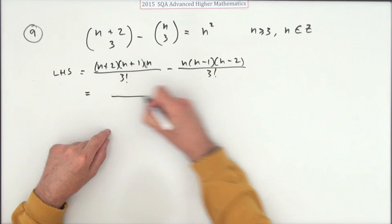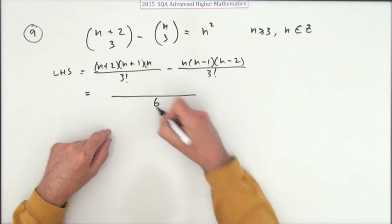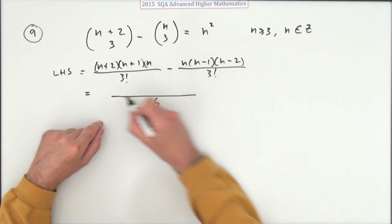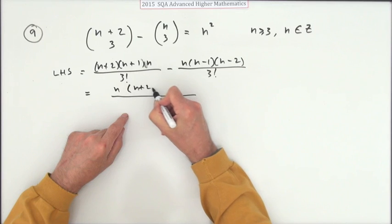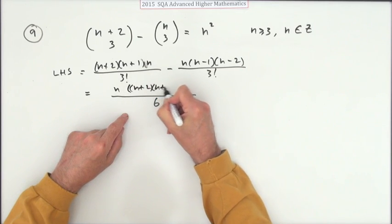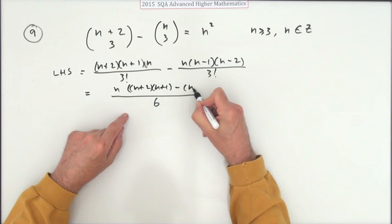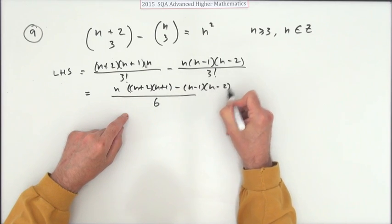Now, they've got this common denominator of 3 factorial, I'll just jump in with 6. They've got a common factor of n, so I'll take that out. So I'm left with n plus 2 times n plus 1 minus n minus 1 times n minus 2.